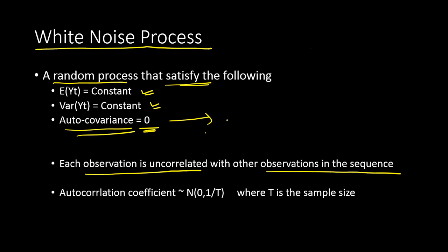White noise process indicates that the data is totally random and there is absolutely no pattern in the data. When you find a white noise process, it is not appropriate to go ahead with modeling. What one should do is first test for the white noise process before proceeding with any modeling.